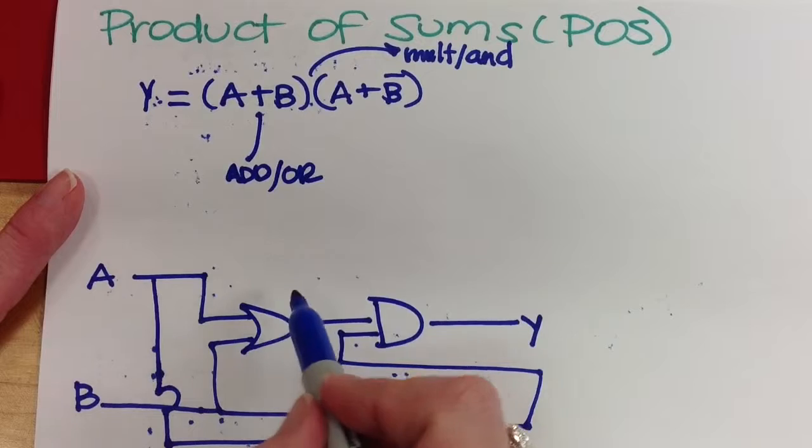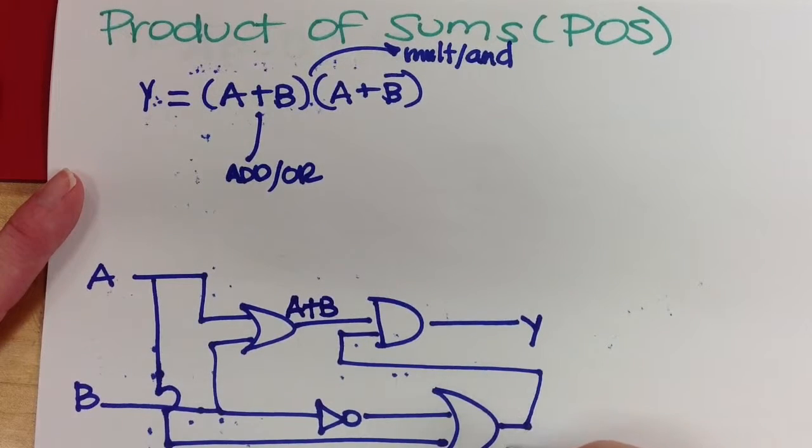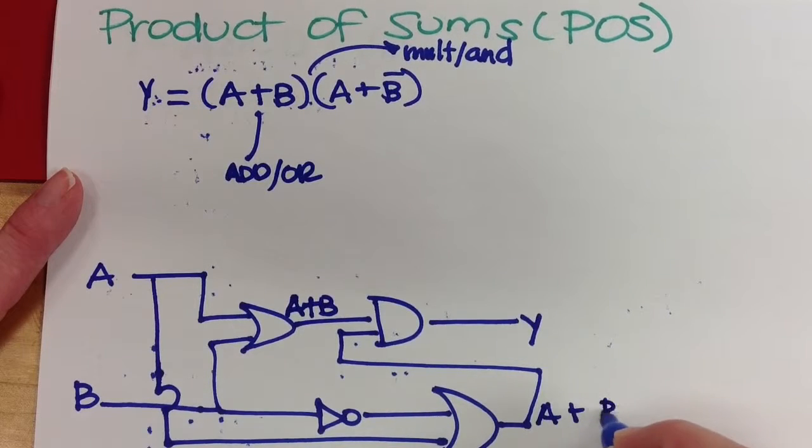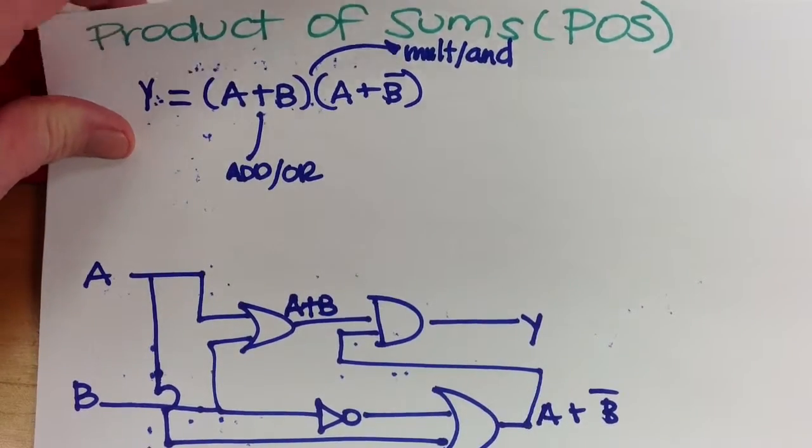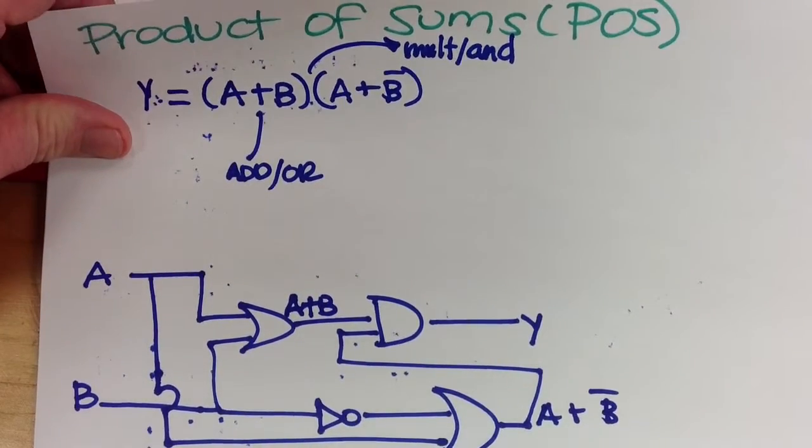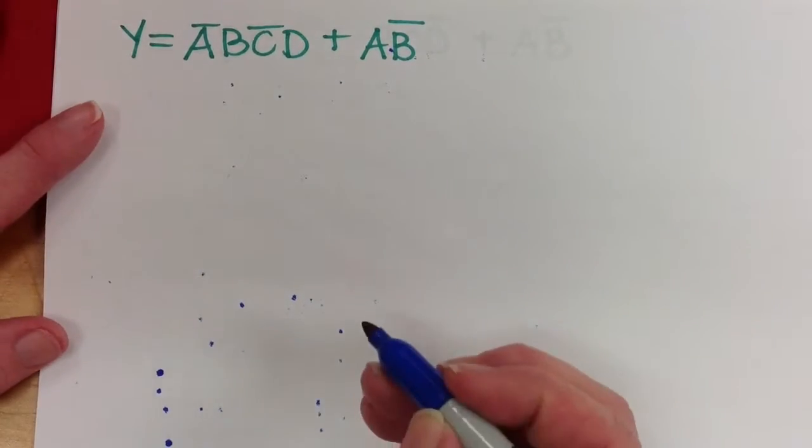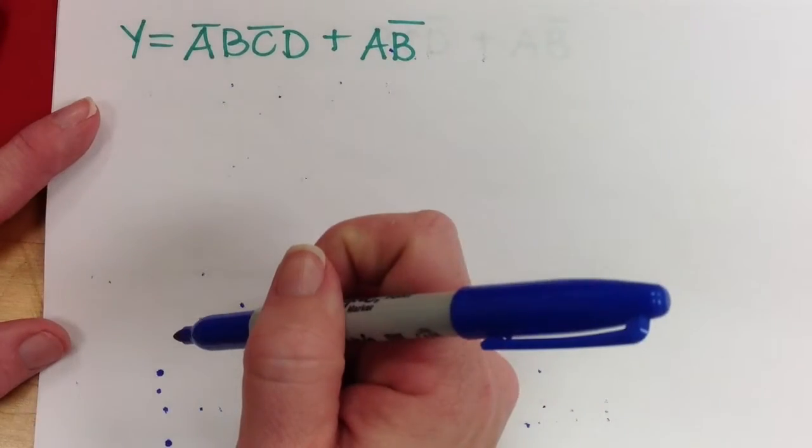So because this one is A or B, and this one was A or not B, that output is the same thing. So that's the difference between sum of products and product of sums. So you know what sum of products looks like. You know how to make a truth table for this, and you know how to sketch it.